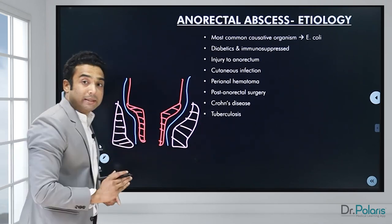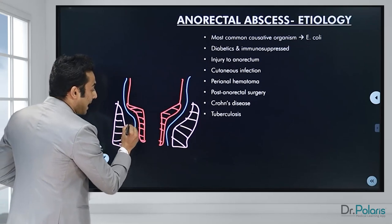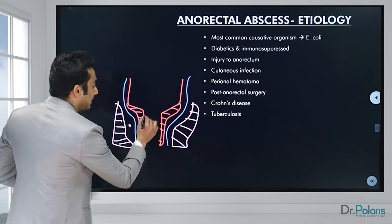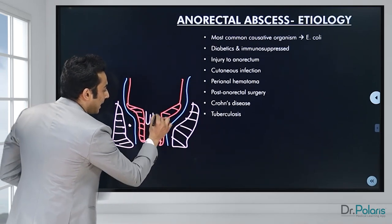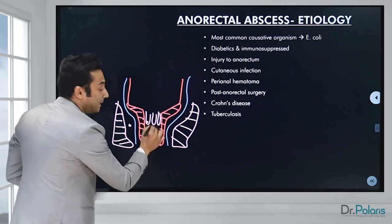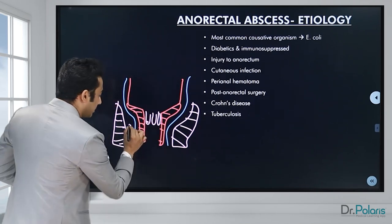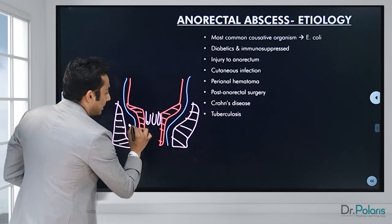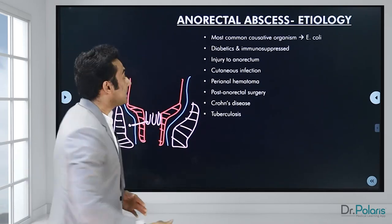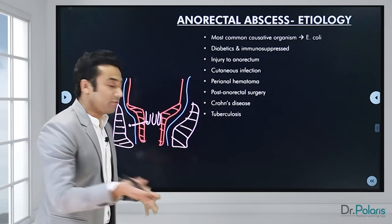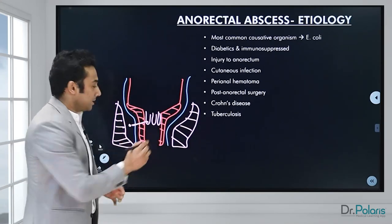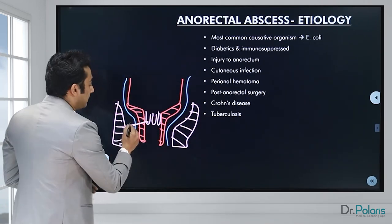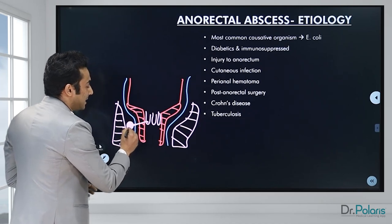The space between the two sphincters is called as the intersphincteric space, and this space has the anal glands. The opening of the anal glands opens at the anal sinuses within the anal columns. This is the anal gland, this is the opening of the anal gland, and the duct of the anal gland will run in between. Whenever there is stasis of the anal gland — some obstruction at the anal sinus — there is stasis of the gland, leading to the formation of an abscess.